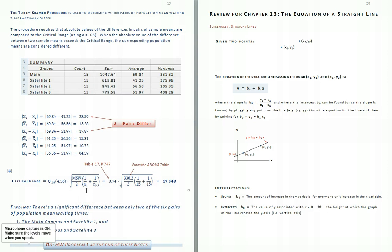Otherwise, we'd be computing different critical ranges for different pairs of populations because the sample sizes would be different. Making the calculation in this case, the critical range is 17.548.